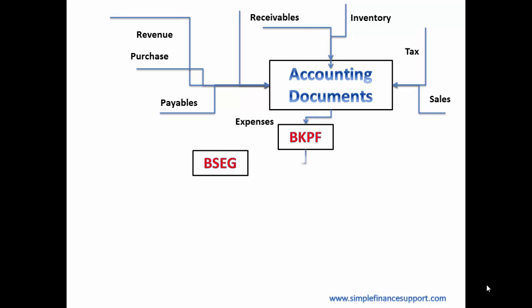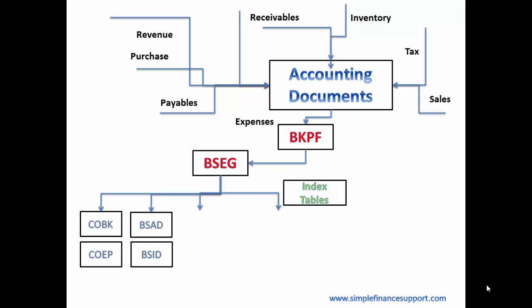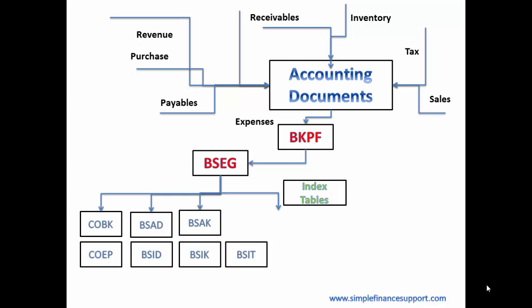These two tables are always updated whenever an accounting document is posted in SAP. Along with these tables, underlying index tables are updated depending on the information available in the accounting document. For example, if the document is related to expenses with a cost object, that information is recorded in the COBK table along with the COEP table, which forms the base for the controlling module. If accounting documents are related to customers, you have open items and cleared items tables like BSAD and BSID. Similarly, vendor tables are updated, and if it is tax-related information, a table called BSID is updated.